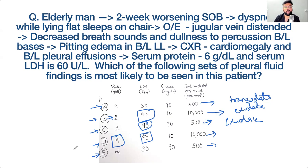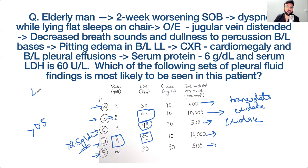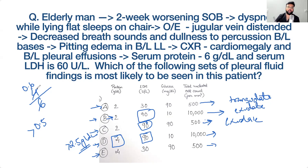For exudate, pleural fluid protein should be more than 2.5 g/dL, or the pleural fluid protein to serum protein ratio should be more than 0.5. Here pleural fluid protein is 4 and serum protein is 6, giving a ratio of 0.67 — more than 0.5. Option E is also exudate because of high protein. So the only transudate option is A.